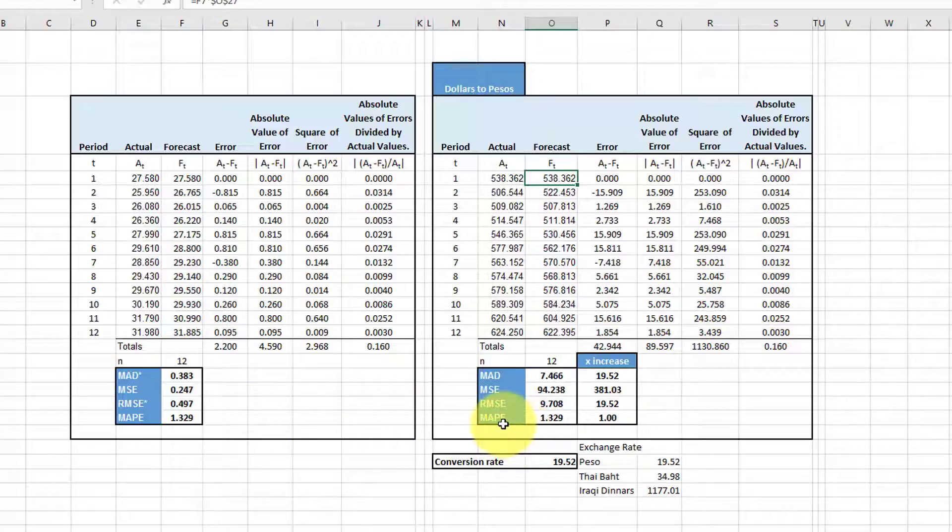If you look at MAPE, which is unit free, it did not change. It's still 1.329 in the second one and 1.329 in the first. So if you're dealing with things that have different units, for example, if you were dealing with two companies or two forecasts using different units, you should be using MAPE to compare those two forecasts and not MAD, MSE and RMSE.